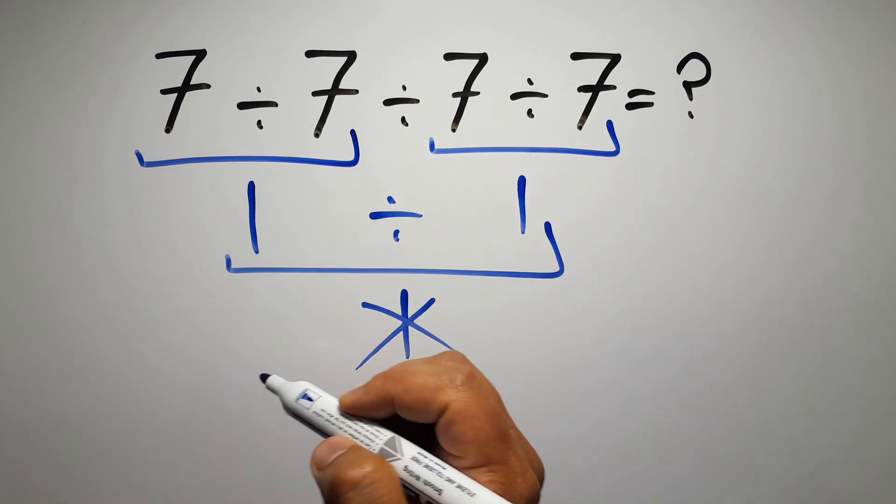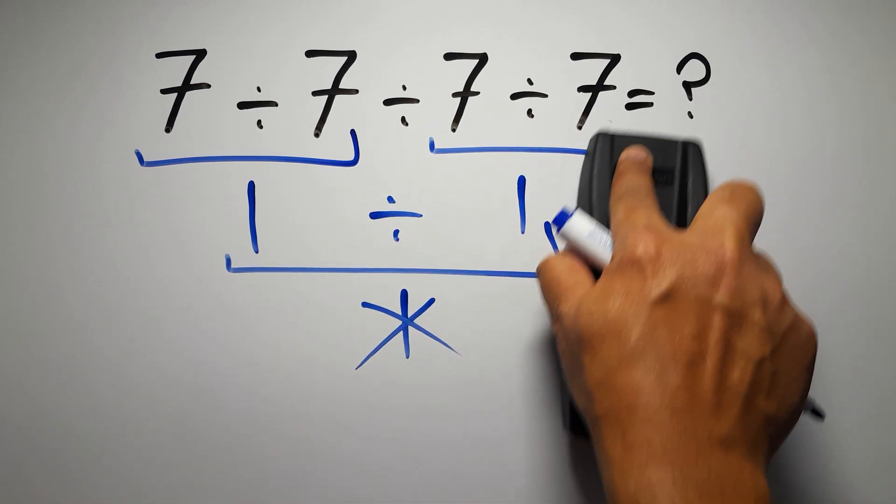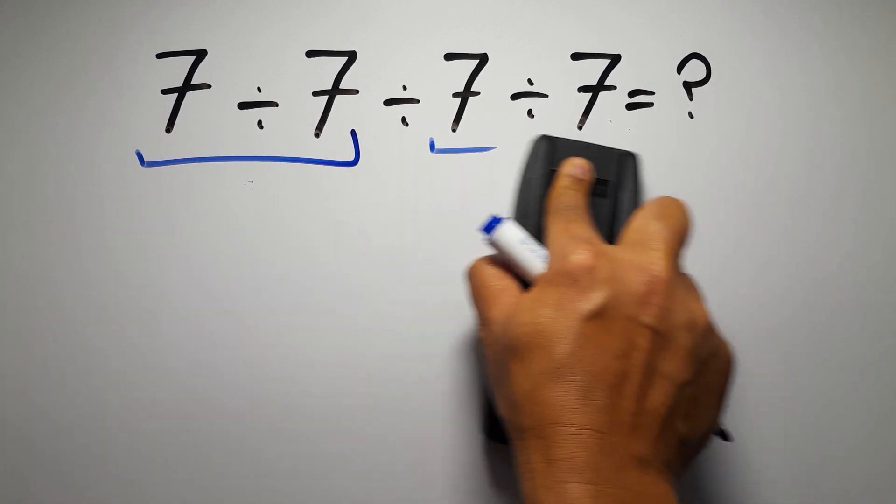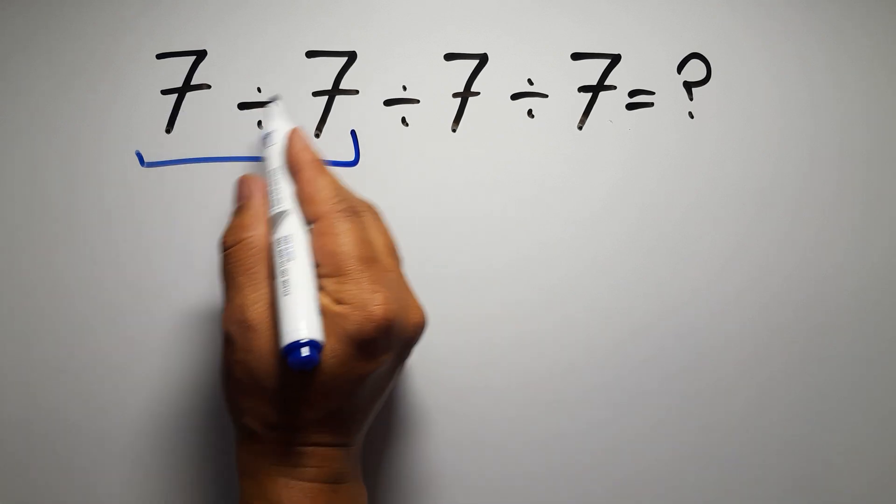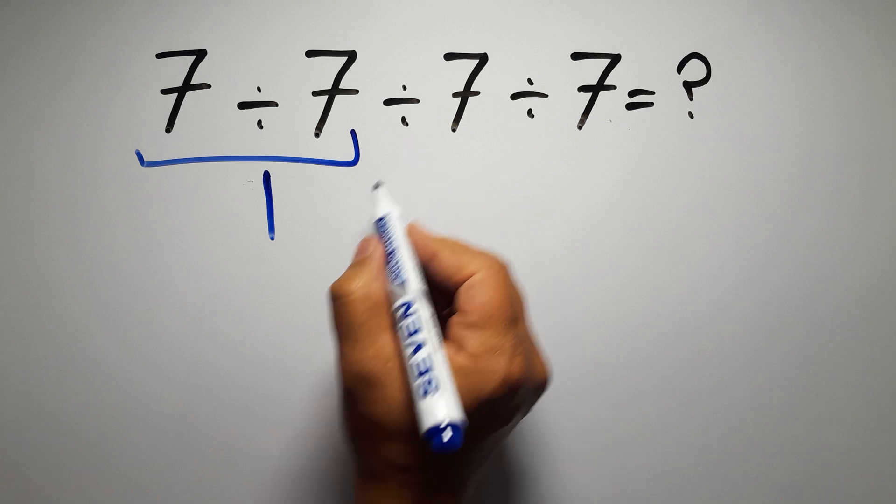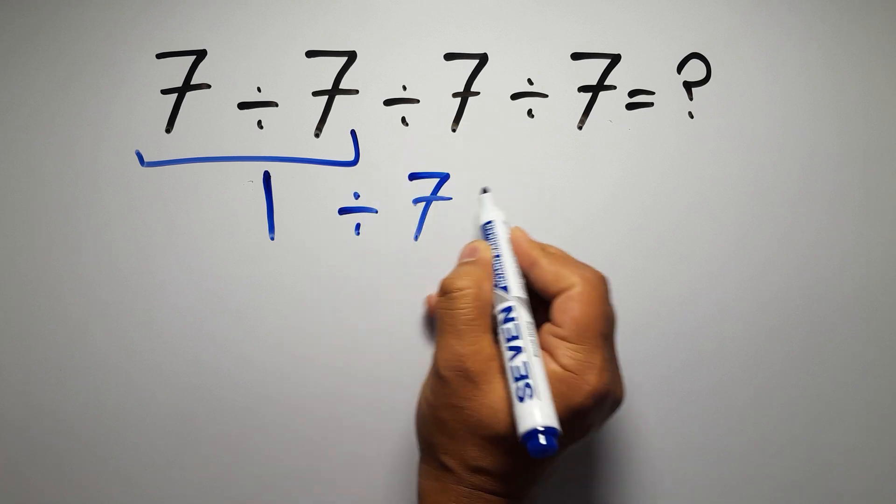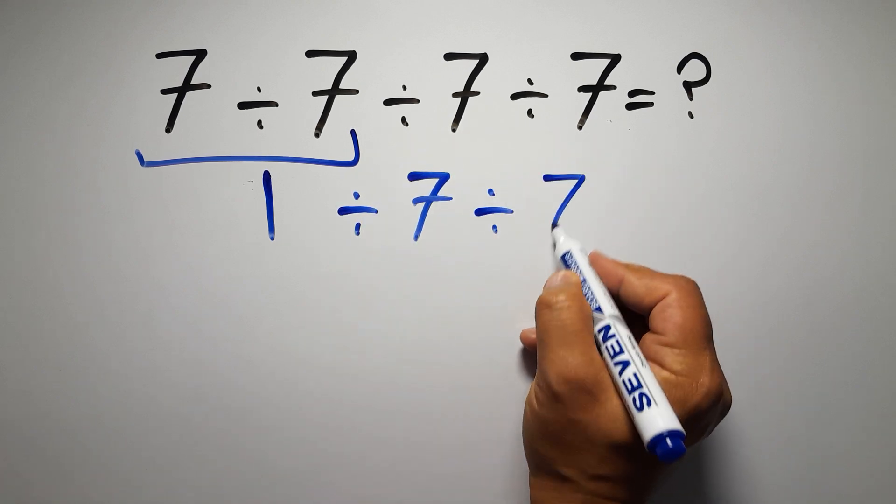If we do this division before this division, it is wrong. So first we have to do this division: 7 divided by 7 is just 1, so 1 divided by 7, and again divided by 7.